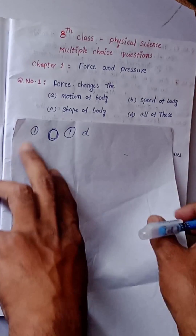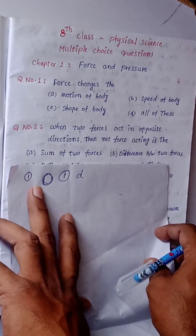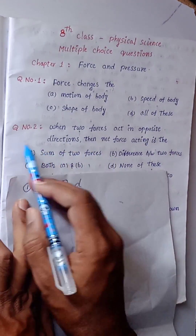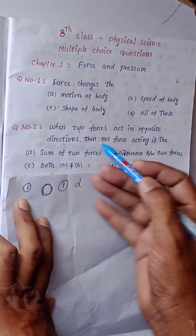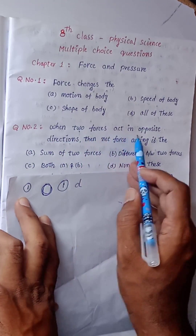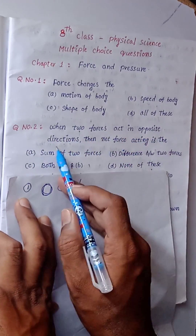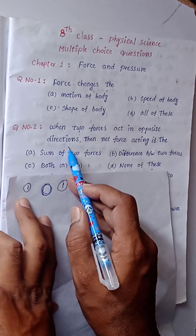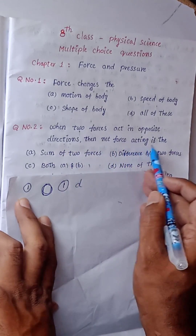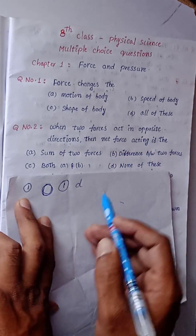Now see the second question here. Question number 2: When two forces act in opposite directions, then the net force acting is dash.